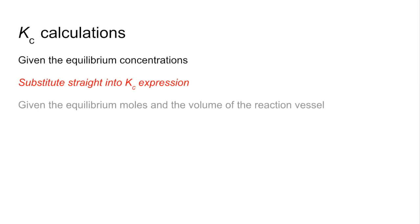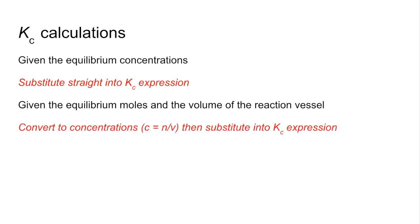We'll look at some Kc calculations now. So we'll just talk through the different types, and then I'll go through in detail the most difficult one. So if you're given the equilibrium concentrations, this is the easiest type, you just substitute the values straight into the Kc expression. You might be given the equilibrium moles and the volume of the reaction vessel, so you need to convert the moles to concentrations, using the concentration equals moles over volume equation, and then substitute into the Kc expression. So both of those are relatively straightforward.